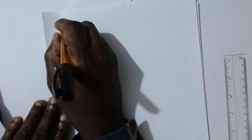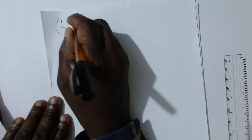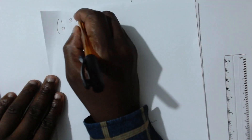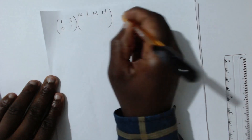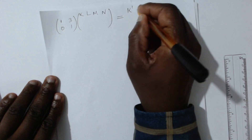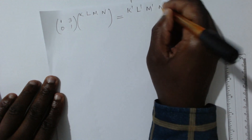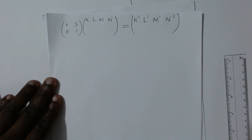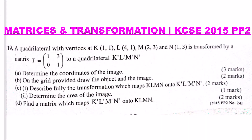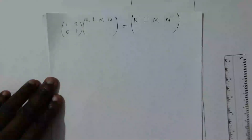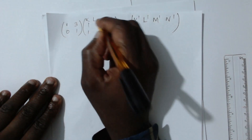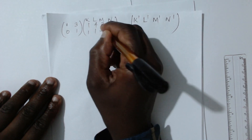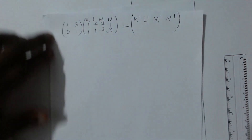So we take the matrix [1, 0; 3, 1] and multiply it with the object matrix containing columns K, L, M, N. Row 1 times column 1: 1×1 + 0×1 = 1, plus 3×1 gives 4. Row 1, column 2: 4 + 3 = 7. Row 1, column 3: 2 + 9 = 11. Then 1 + 9 = 10.